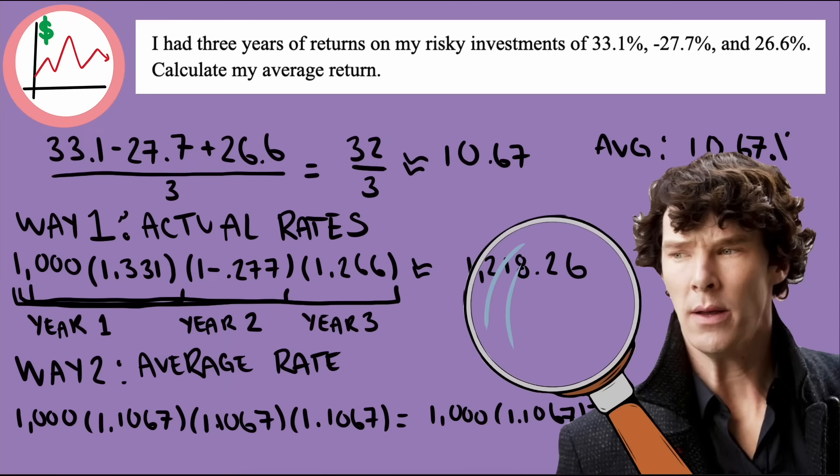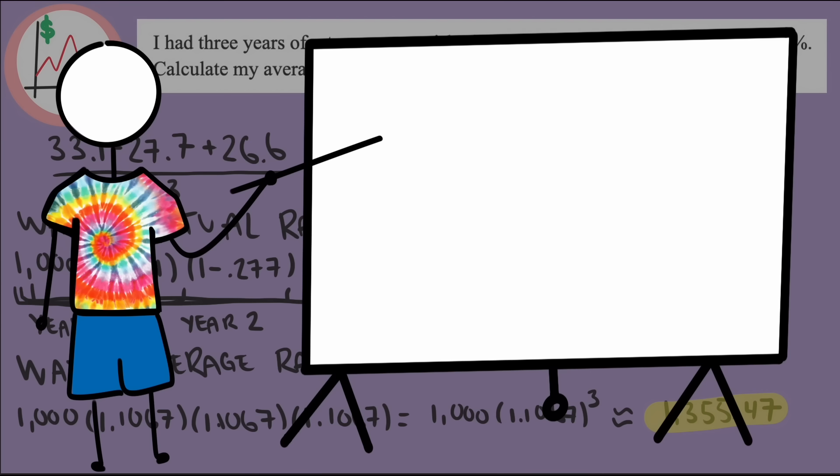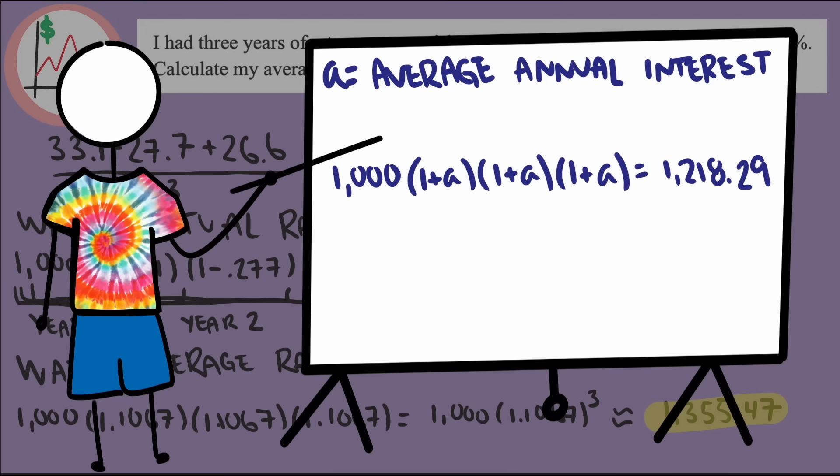Well, this was a clue that the value we calculated couldn't actually be the average, because if we calculated the average correctly, we should have gotten the same outcome both ways. After all, the value I'm trying to find, the average value, is the single percentage I would get each year and still end up with the same total by the end of year 3.